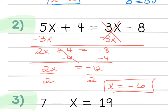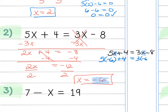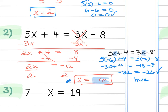It doesn't always have to equal 0. For example, plugging x = -6 into 5x + 4 = 3x - 8: 5 times -6 is -30, and -30 + 4 = -26 on the left. 3 times -6 is -18, and -18 - 8 = -26 on the right. Since -26 = -26 is true, the solution x = -6 is confirmed correct.